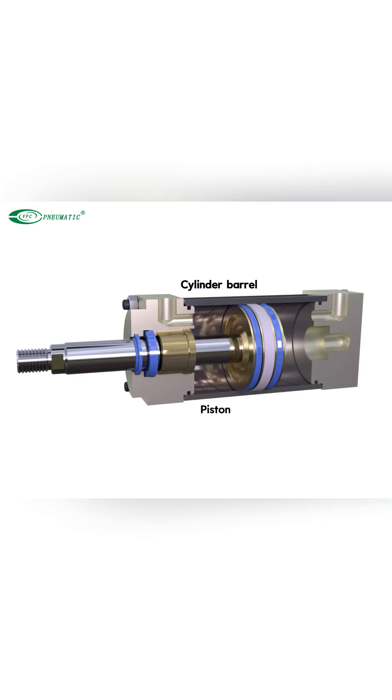After the cylinder is installed, run it 3 to 5 times at rated working pressure with no load. If there is no abnormality, then connect the load to run.